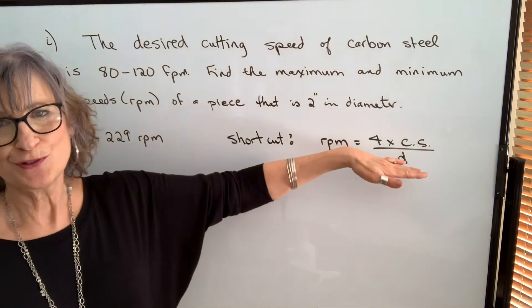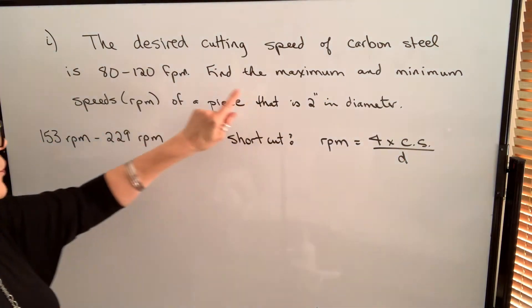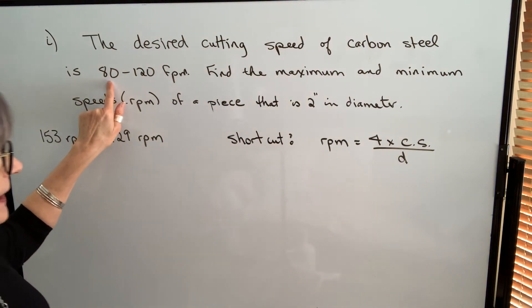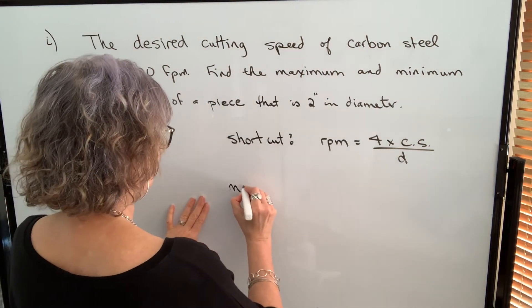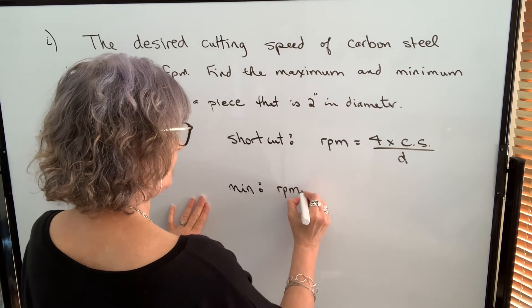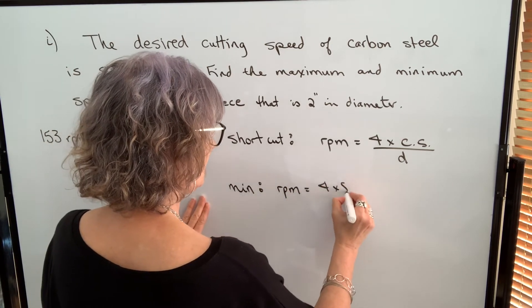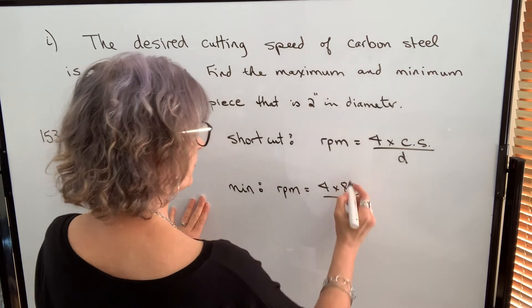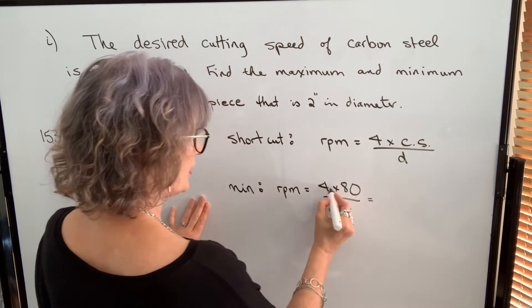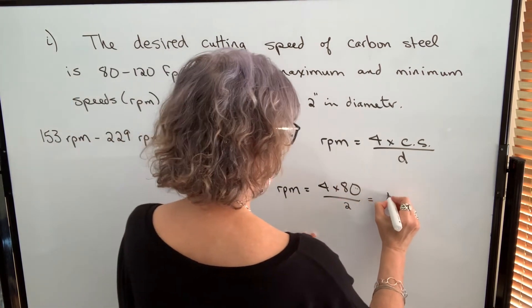Let's find the values by using our shortcut formula. So the first number I'm going to plug in is 80. So my minimum can be found by taking 4 times 80, dividing by the diameter of 2. So that's 320 divided by 2, which equals 160.